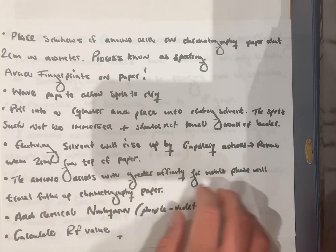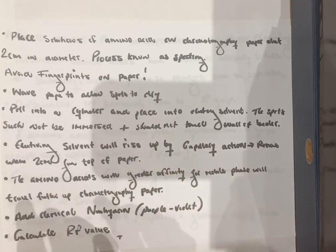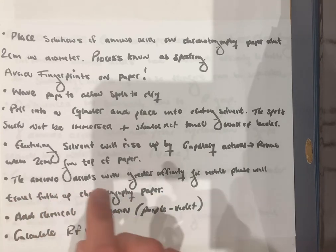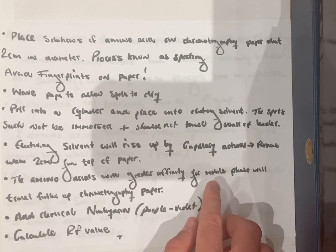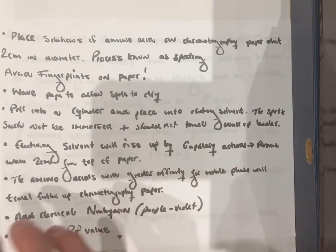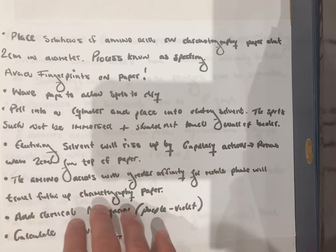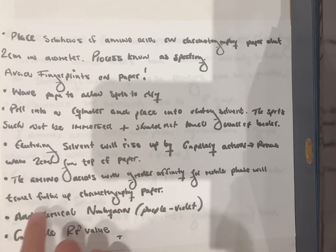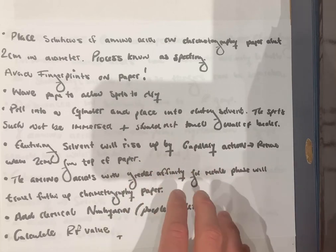The amino acids with a greater affinity for the mobile phase will travel further up the chromatography paper. The amino acids with a greater affinity for the stationary phase will form strong bonds with the stationary phase and will not travel as far. At this stage, however, the amino acids are not visible.